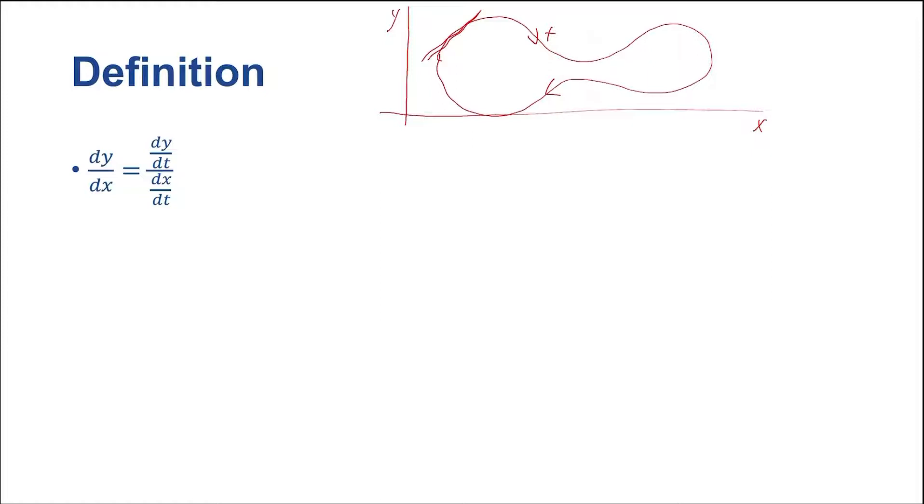And t controls how fast this moves around. So we actually want, what we want to find is a relationship between x and y, and we don't want t in the picture at all. We're only interested in the shape of this curve, not how fast it's being drawn.